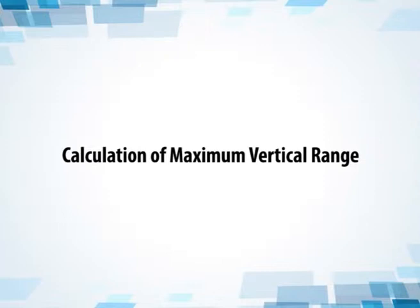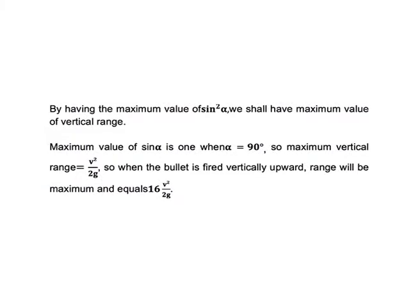For maximum vertical range: by maximizing sin² alpha, maximum value occurs when alpha = 90 degrees, giving maximum vertical range = v² / (2g). So when the bullet is fired vertically upward, the range is maximum and equals v² / (2g).